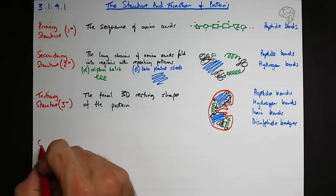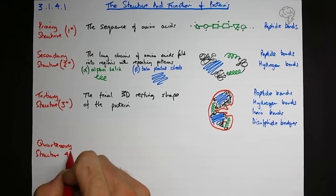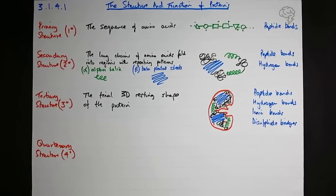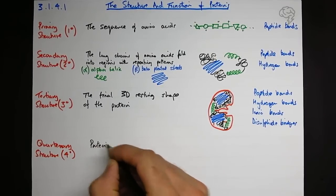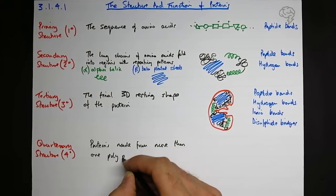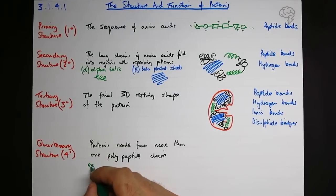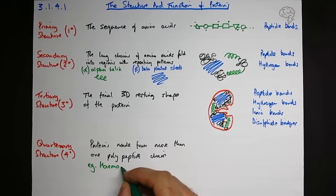The last one we have is the quaternary structure, 4°. What is the quaternary structure? Well, the definition of a quaternary protein is proteins that are made up from more than one polypeptide chain. An example of that is hemoglobin. We've got collagen and other things as well, but this is the most common one that you come across.